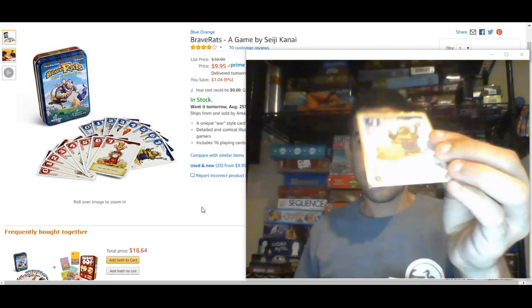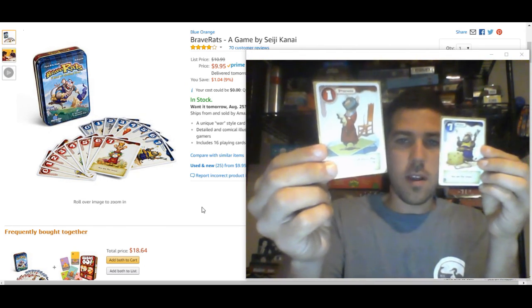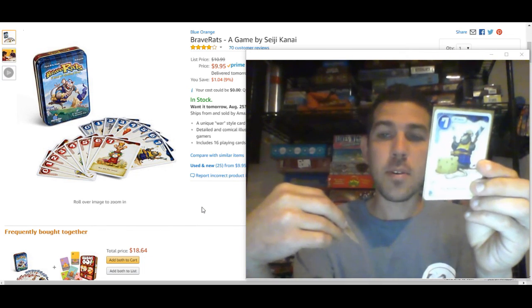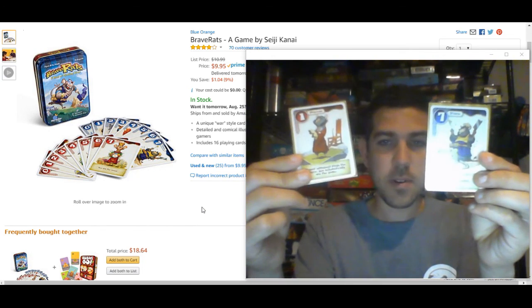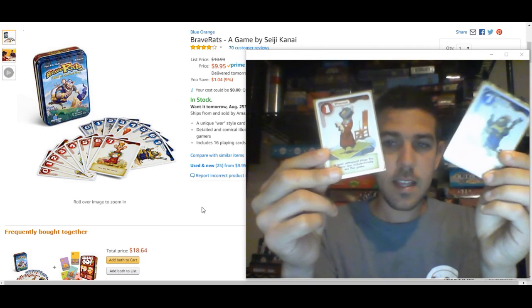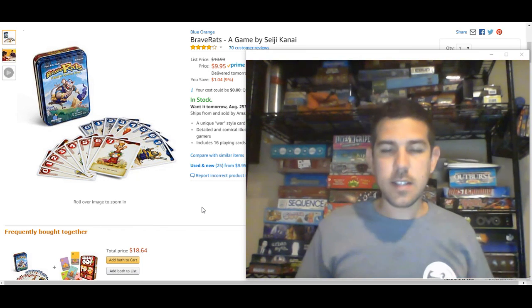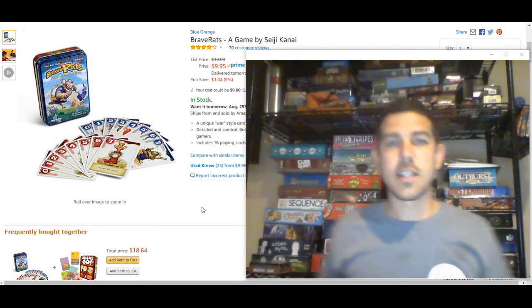The prince is a seven, which is the best card. And the princess is a one. However, the prince is in love with the princess. So if the princess gets played, the princess automatically beats the prince and wins the entire round.